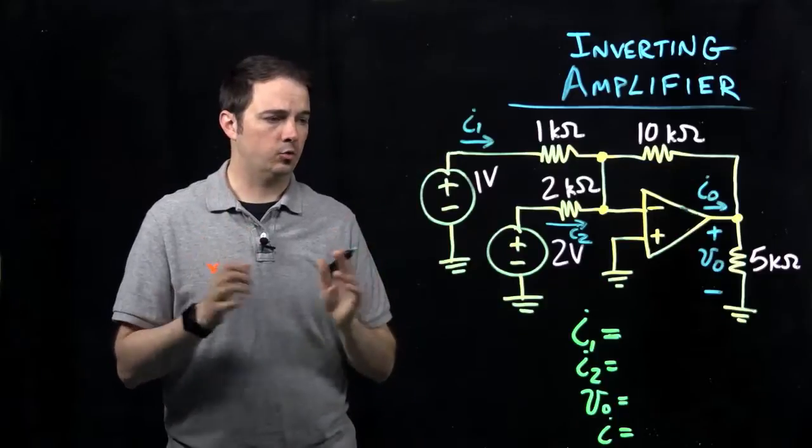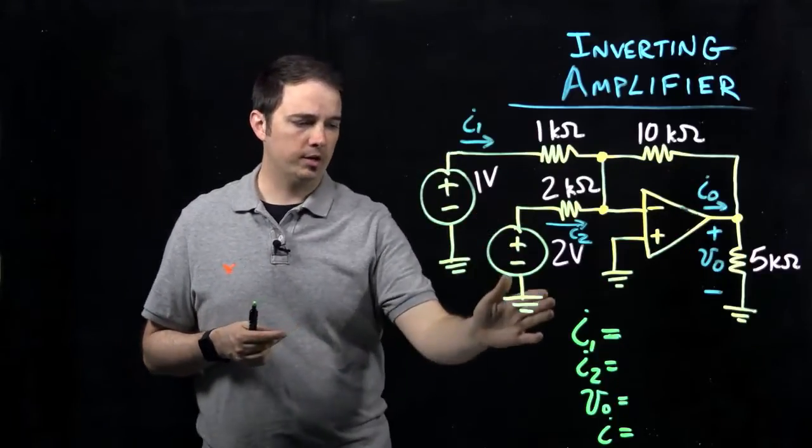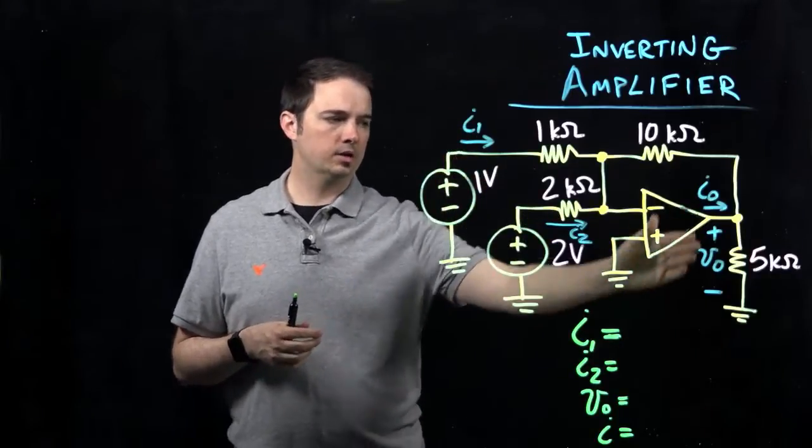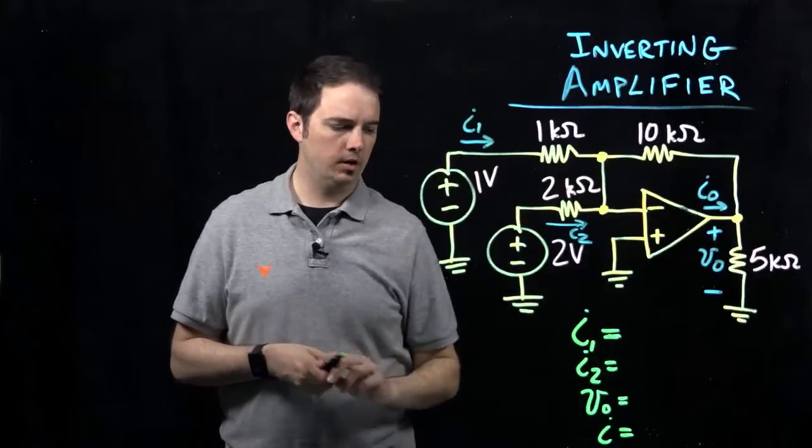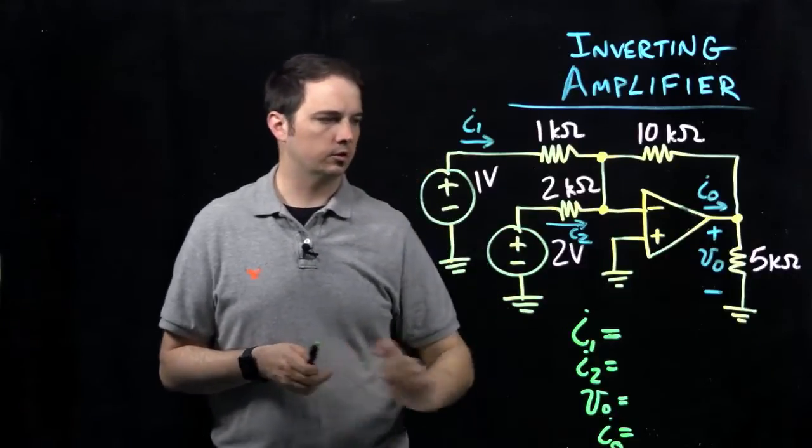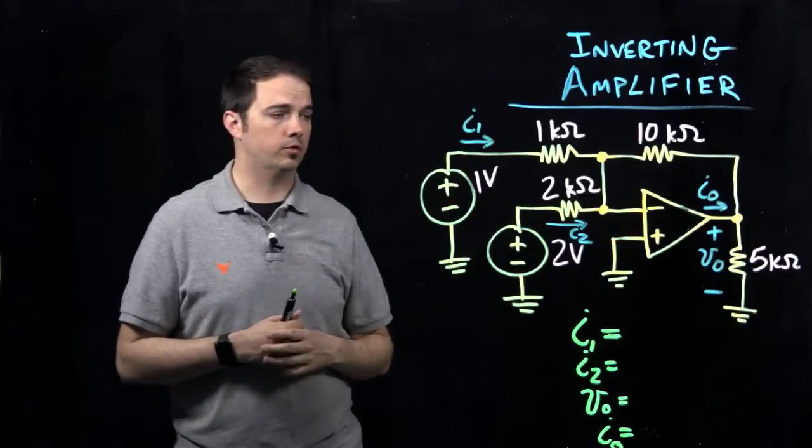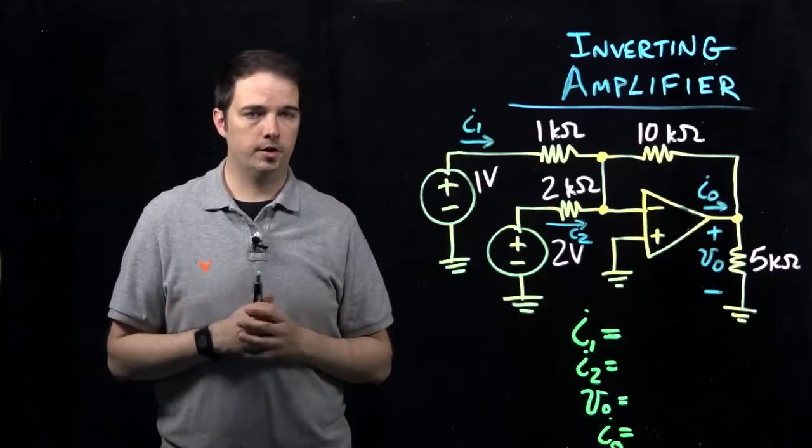First, I'll take a quick minute to copy this down, and then we'll get into approaching how we come up with the various currents I1 and I2 indicated here, as well as our output voltage across the 5 kiloohm resistor, and the current I0, which is the current coming out of the output terminal from the op amp.